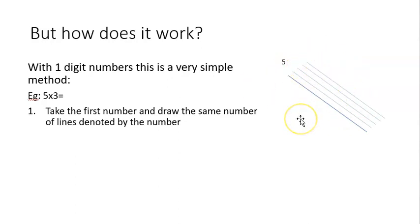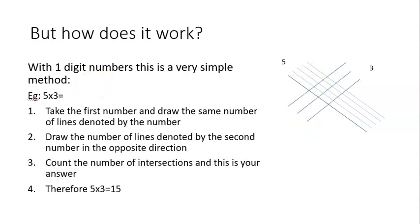Step two: we do the same with the second number, except in the opposite direction. So I took the three lines and put them in the opposite direction, from right to left. Next we count all these intersections, and if you count them you'll find the answer is 15. 5×3 equals 15, but you probably could have gotten that anyway.